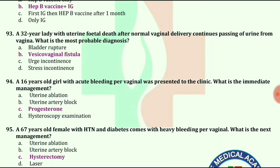A 16-year-old girl with acute bleeding per vagina was presented to the clinic. What is the immediate management? The answer is progesterone.